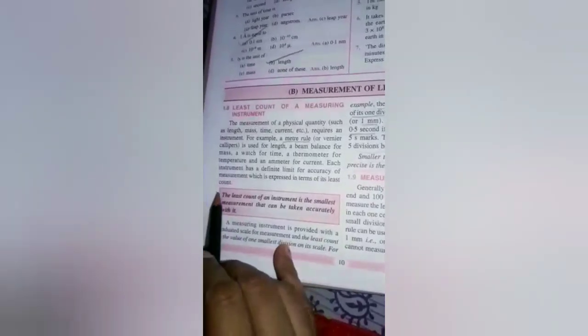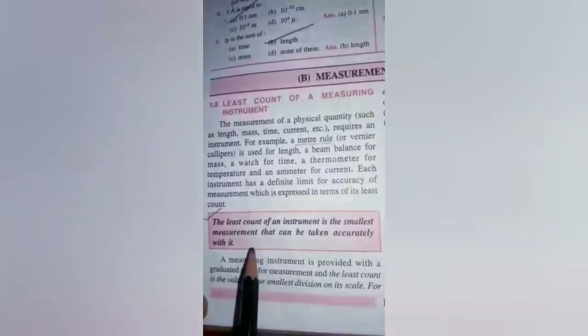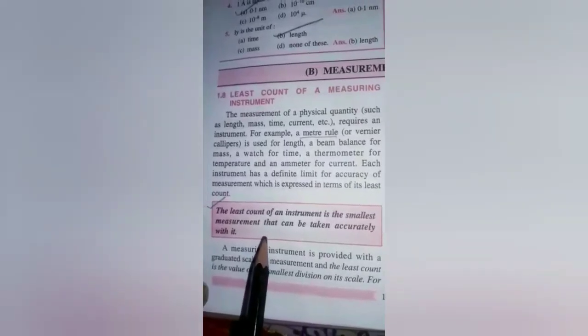Here we go with the B part of chapter 1 - measurement of length. The first topic is least count. Least count of an instrument is the smallest measurement that can be taken accurately with it. This definition you have to learn. The meaning of this topic is: when we measure something with the help of an instrument, what is the minimum value we can read accurately with that instrument - that is called least count.